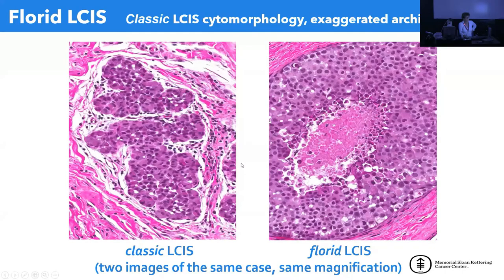Florid LCIS is essentially an architectural diagnosis — very exaggerated expansion with exactly the same cell cytomorphology as classical LCIS. Type A or type B cells can form florid LCIS and may coexist in the same case. The massive expansion of the acinus is characteristic of florid LCIS, while the cells themselves are identical to classical LCIS.